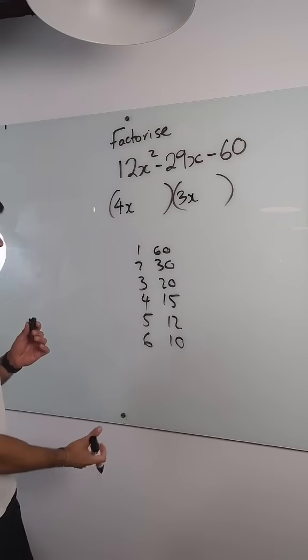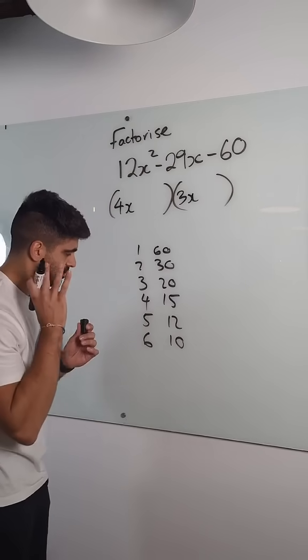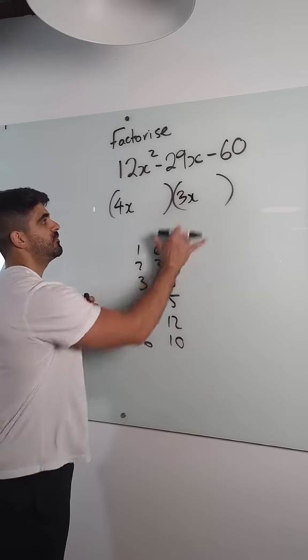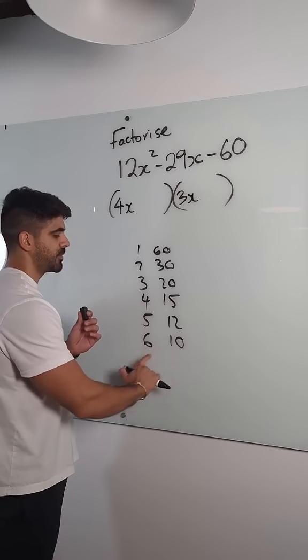We need to try out all of these options. There's some really cool strategies you can use here. Now, 6 and 10, if you put that in here, I already know it's not going to work, because 6 and 10 are both even.